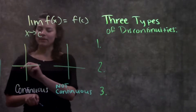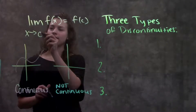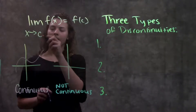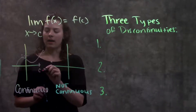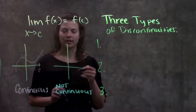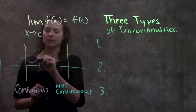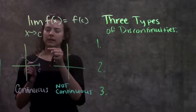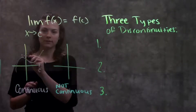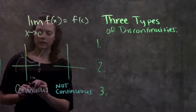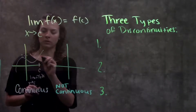Let's say we have a function f(x). Our definition tells us that if the limit as x approaches c of f(x) is equal to f(c), then that function is continuous. Looking at the first part — the limit as x approaches c — here's our value c. The limit exists as x approaches c, and from both sides the function is approaching the value 2. So the limit as x approaches c of this function is equal to 2.